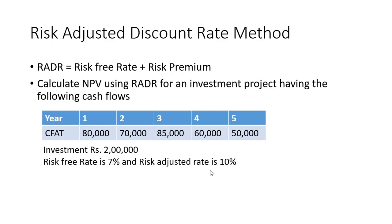The risk free rate is 7% and the risk adjusted rate is 10%. In this question, the RADR rate is already given as 10%. If the risk free rate is 7%, you can calculate the risk premium as 10 minus 7, which is 3%. So a person taking high risk by investing in the company's project wants high compensation in the form of returns. If risk free rate and risk premium are given, you add 7 plus 3 to get 10. Here 10% is directly given, so we will use 10% as the discounting factor.